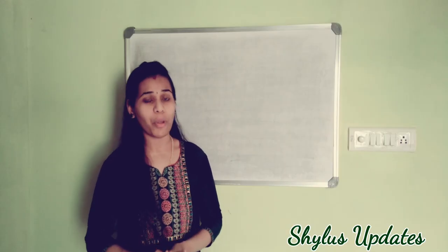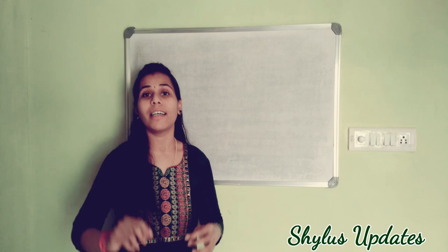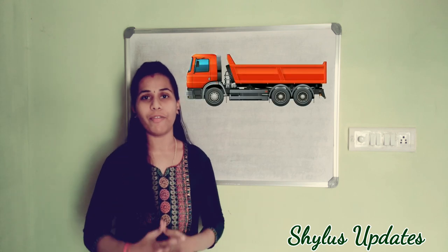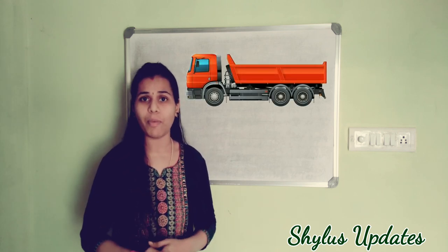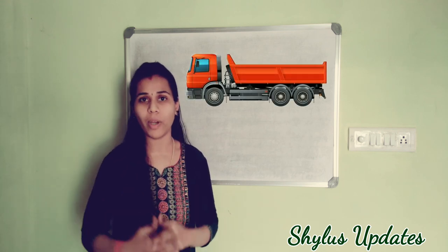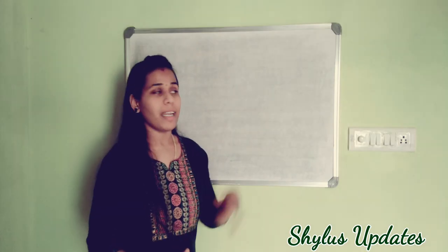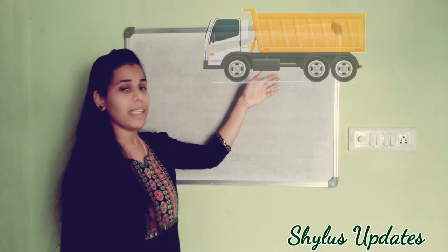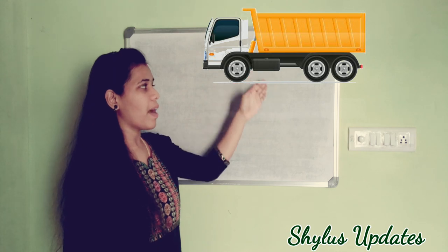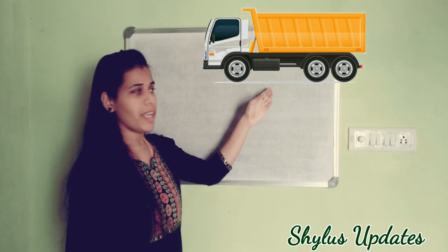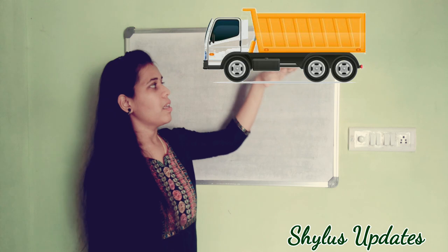To calculate the quantity of materials, first you have to see the shape of the lorry — whether it is rectangular in shape or trapezoidal in shape. In some lorries, as you can see in this picture, the front part is sloped in shape and the back part is straight in shape.